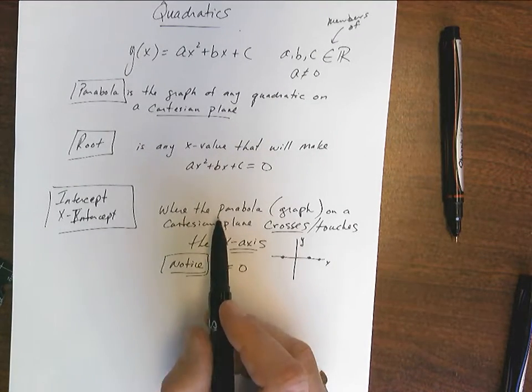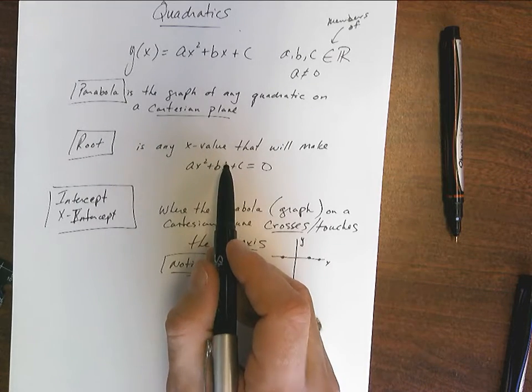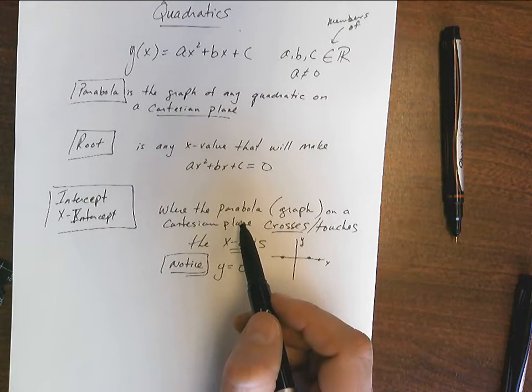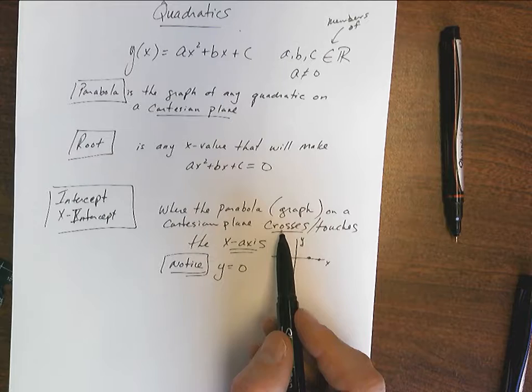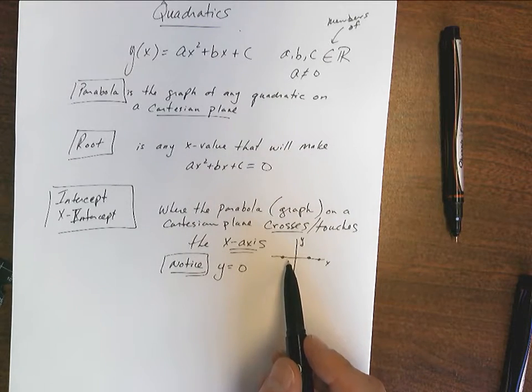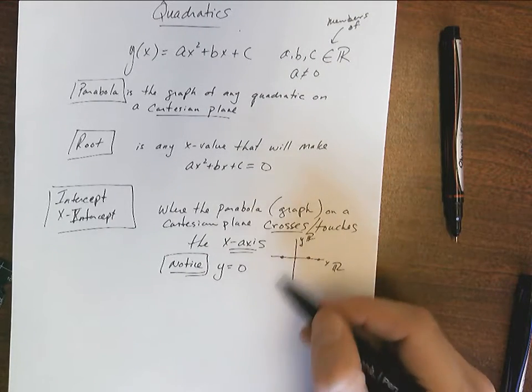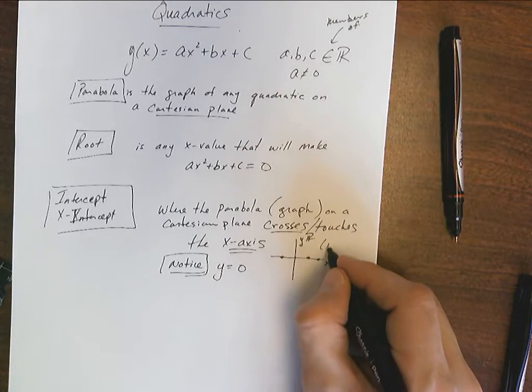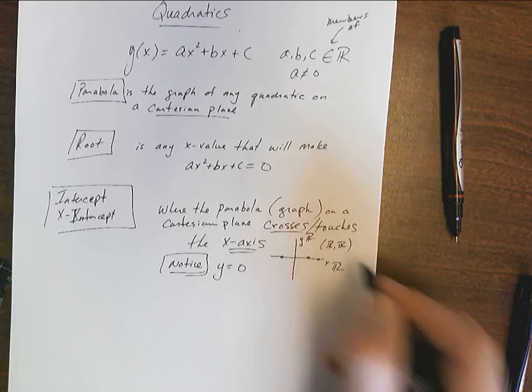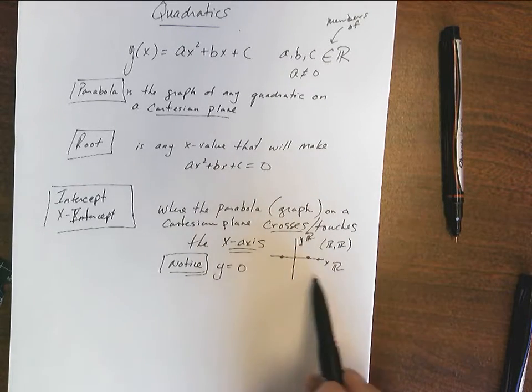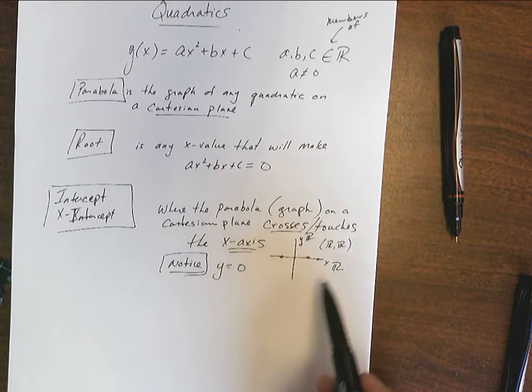Intercepts, however, are the graphing of these roots on a Cartesian plane. A Cartesian plane is made up of a real number line and another real number line, which means that all of the coordinate points are going to be real number coordinate pairs, which means there's nowhere for a complex number to be graphed on this.